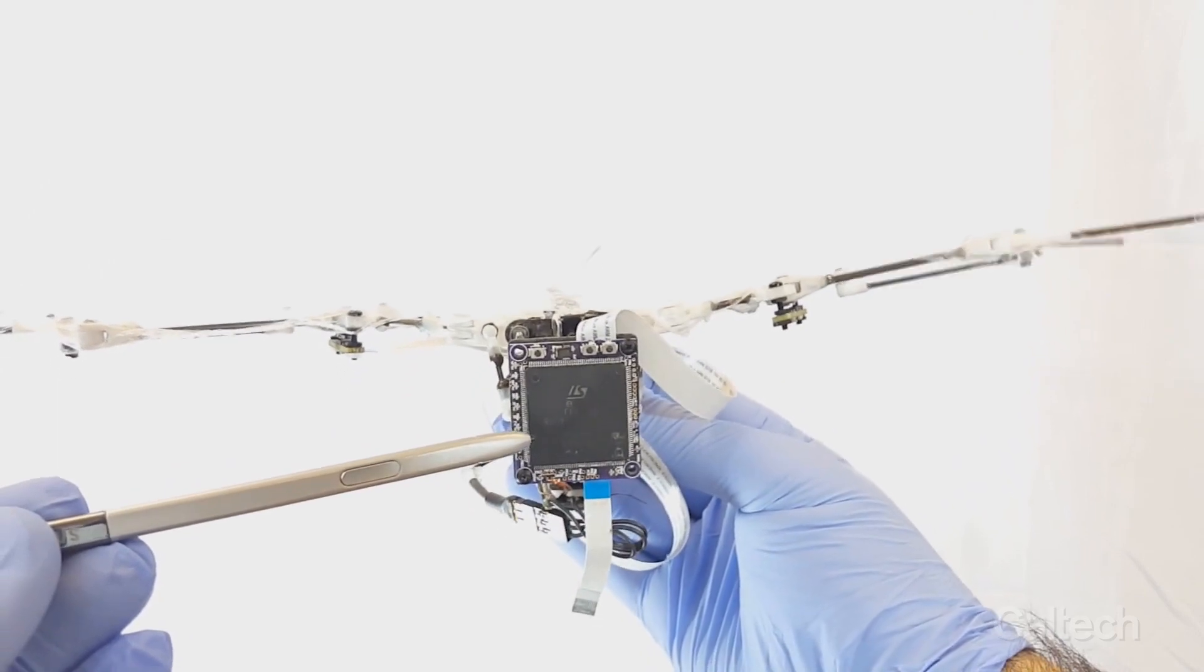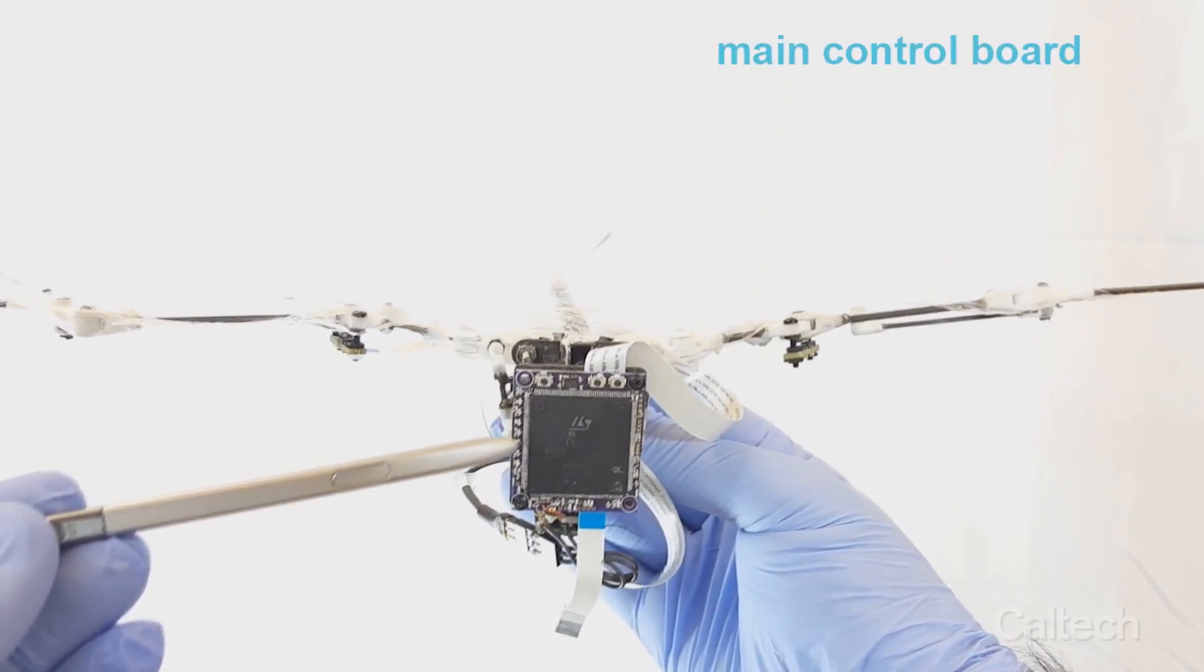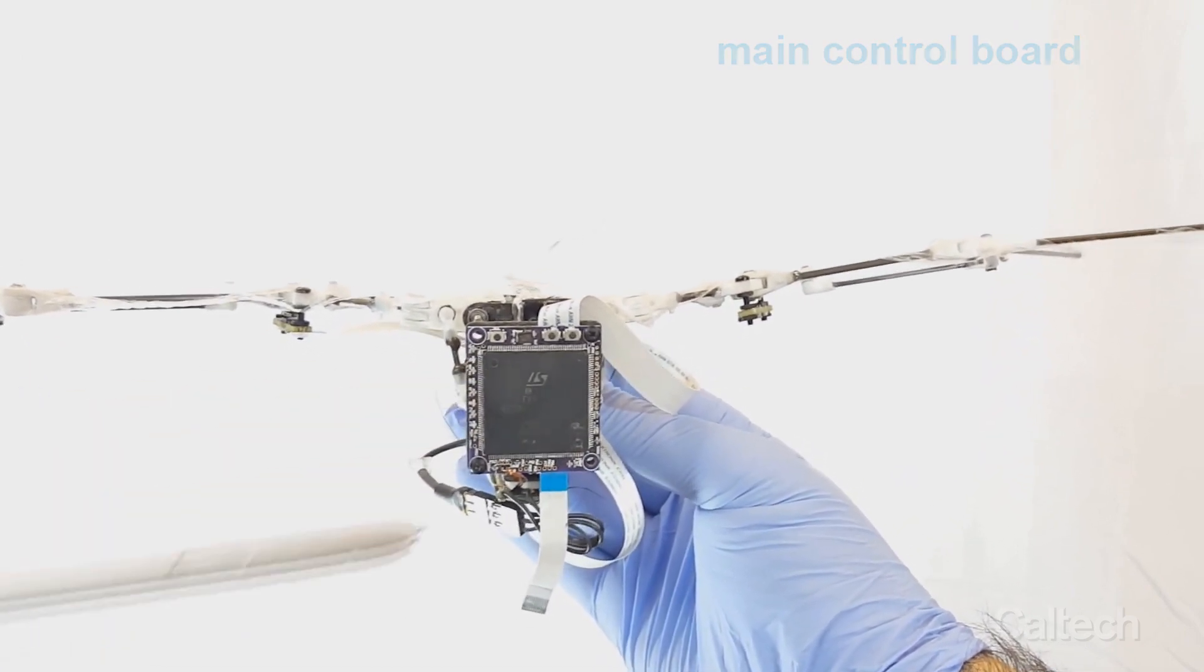Our BatBot B2 has an onboard computer and several sensors for performing autonomous flight control and navigation in its environment.